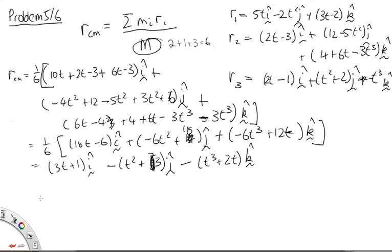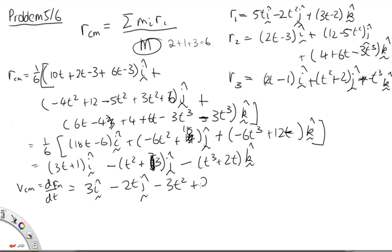We're not asked to find the position of the center of mass, but instead the velocity. The velocity of the center of mass equals dr/dt. Taking the derivative of each component gives v_cm = 3i minus 2tj minus (3t² minus 2)k. At t = 1, substituting in: v_cm = 3i minus 2j minus (3 minus 2)k = 3i minus 2j minus k.